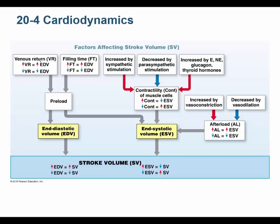High venous return leads to high end diastolic volume, which leads to high preload and high stroke volume — that's good. Low venous return leads to low EDV, low preload, and low stroke volume. High contractility means you pump out most of your blood — low end systolic volume, high ejection fraction. Poor contractility means high end systolic volume and a low ejection fraction.